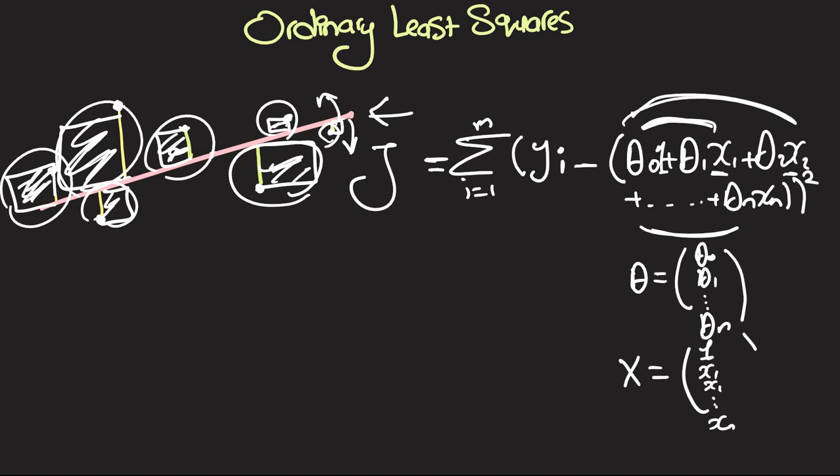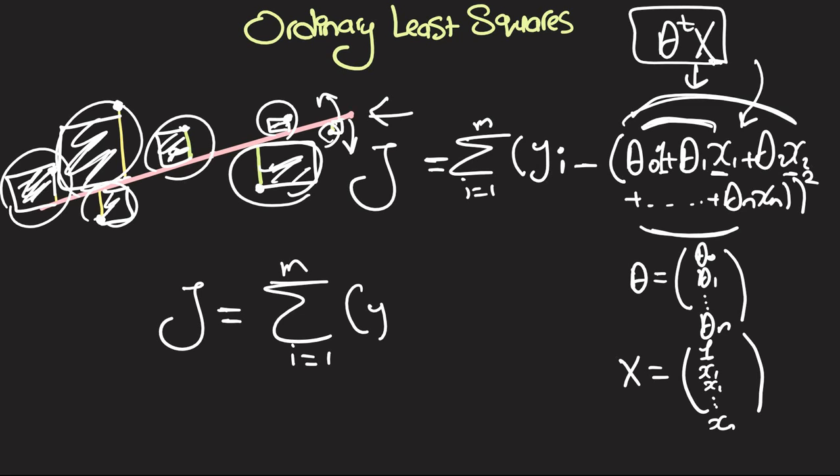And then once we do this, we can instead here write down theta transpose x. And if you try to compute this using matrix multiplication, we're going to go back to this. So we can write down the cost function here as J equals sum from i equals 1 to m of yi minus theta transpose xi squared.